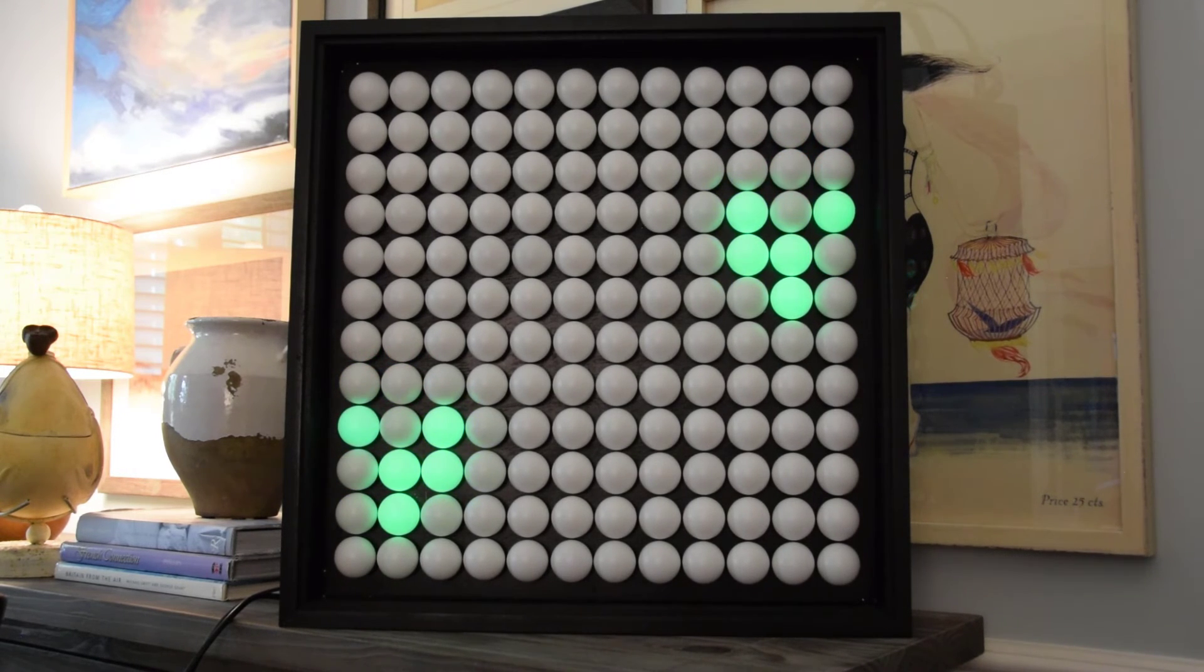If a cell is alive and it's going to die, we transition from green to red and then red to black. And if a cell is dead but it's going to come to life, we transition from black to yellow and then yellow to green.